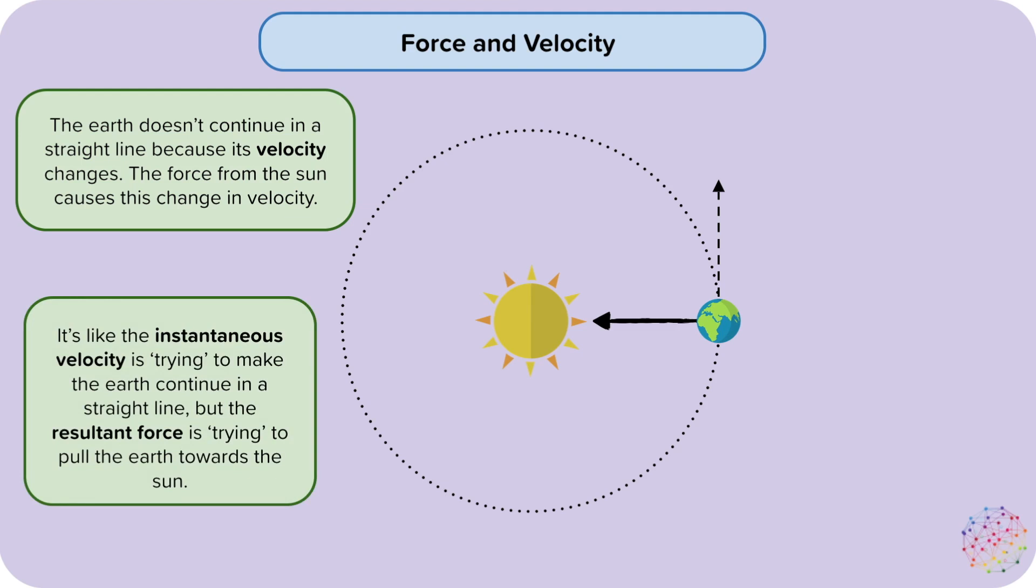It's like the instantaneous velocity is trying to make the Earth continue in a straight line, but the resultant force is trying to pull the Earth towards the Sun. It is important to note that the Earth does not actually get to start moving in a straight line because the force from the Sun is always pulling it away from this path.